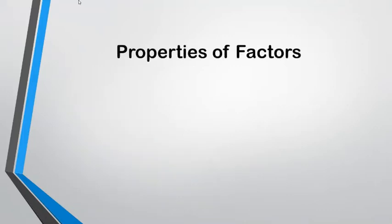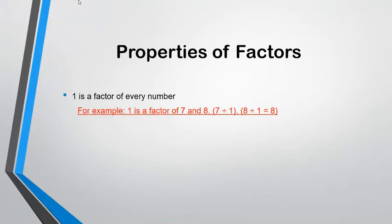Now we are going to learn some properties of factors. Number one: 1 is the factor of every number. For example, 1 is a factor of 7 and 8. 7 ÷ 1 = 7 and 8 ÷ 1 = 8. Number two: Every number which does not have a 0 is a factor of itself.